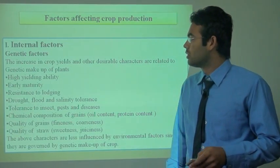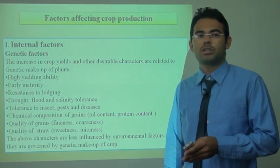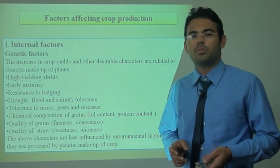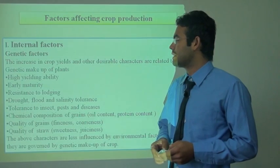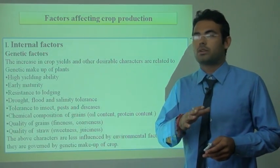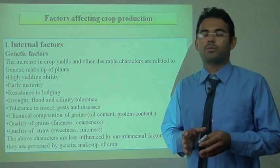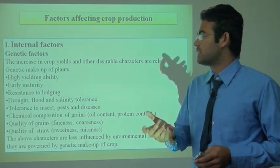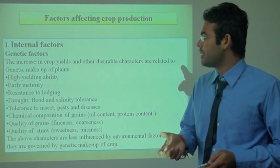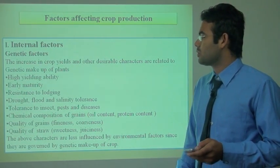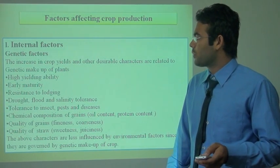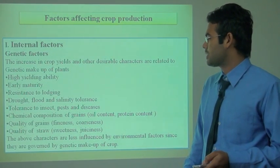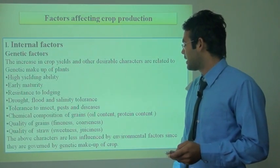The high yielding variety leads to early maturity — like every crop season 2 to 3 months, allowing more than one crop. Resistance to lodging means any crop that falls due to high winds or bad winds. Drought, flood and salinity tolerance, tolerance to insects, pests and disease, and chemical composition of grain like oil content and protein content are all governed by the genetic makeup.